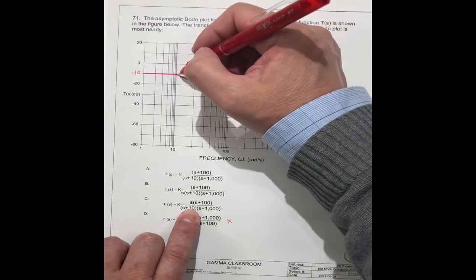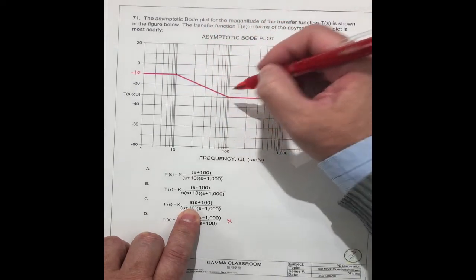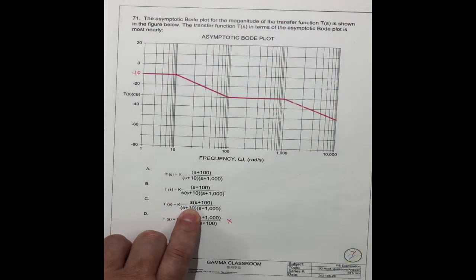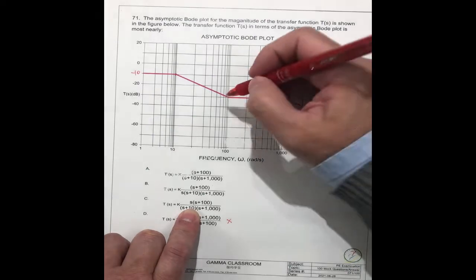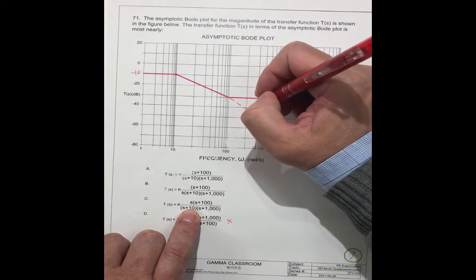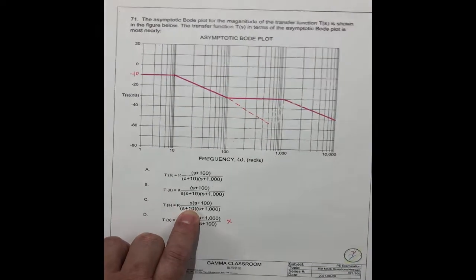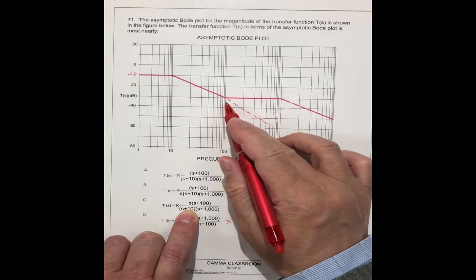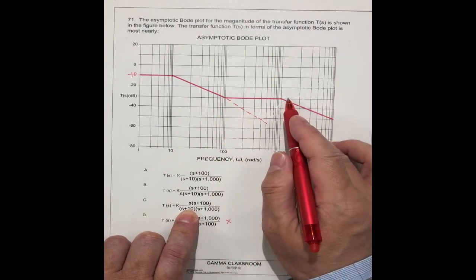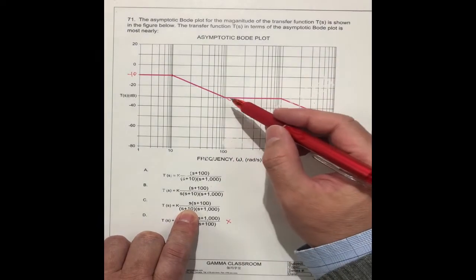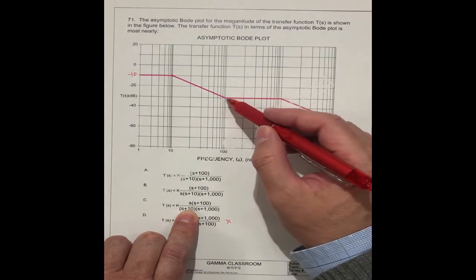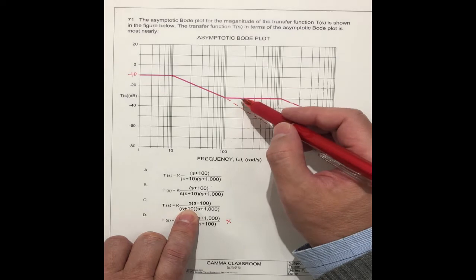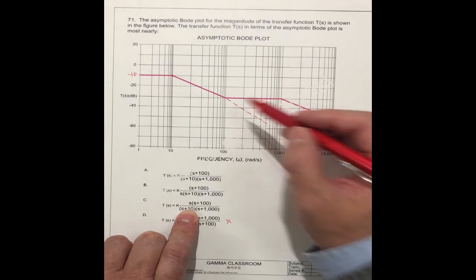And it will continue to go. Normally, it should continue to go this way. But here, at 100, this goes flat. That means one line is reduced in this direction.